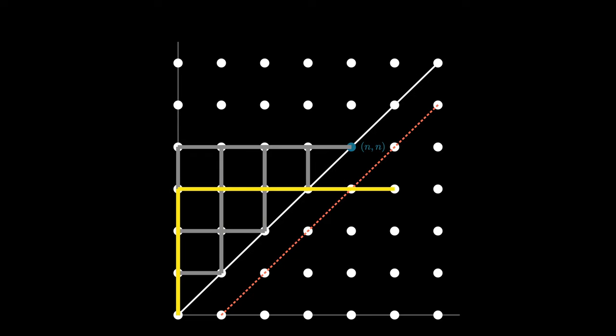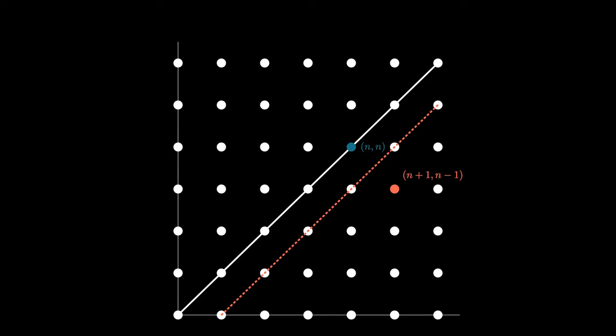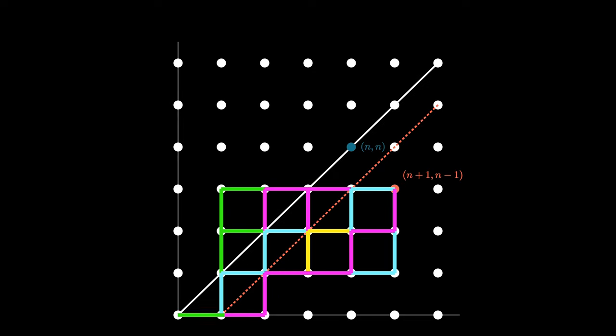In fact, all of the reflected lattice paths end at the point (n+1, n-1), which is the reflection of the point (n,n) over the red dotted line. But now if we enumerate all the northeast lattice paths from (0,0) to the point (n+1, n-1), we see that each of them crosses the red dotted line, and therefore must have been one of the reflected paths.